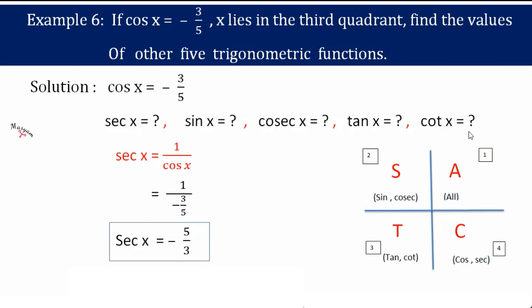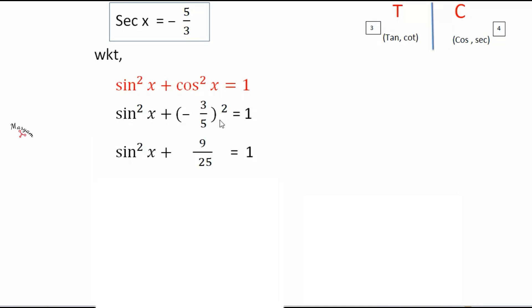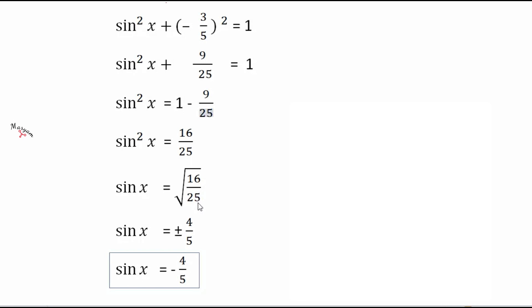Now let us find sin x. We know that sin²x + cos²x = 1. We already have the value of cos x, which is minus 3 by 5. Substituting: sin²x + (3/5)² = 1, so sin²x + 9/25 = 1, giving sin²x = 1 − 9/25 = 16/25. Taking the square root gives plus or minus 4 by 5. But in the third quadrant sine is negative, so sin x = minus 4 by 5.